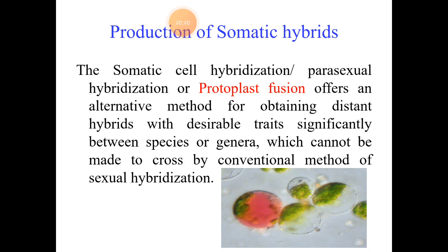The next method is in vitro germplasm conservation. Germplasm refers to the sum total of all genes present in a crop species. The germplasm of endangered plant species is preserved for future usage. A global organization called the International Board of Plant Genetic Resources (IBPGR) is established to conserve the germplasm of endangered plant species throughout the world.